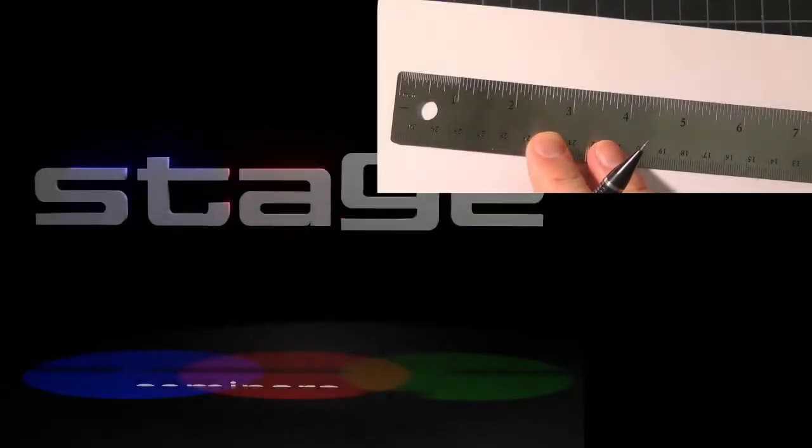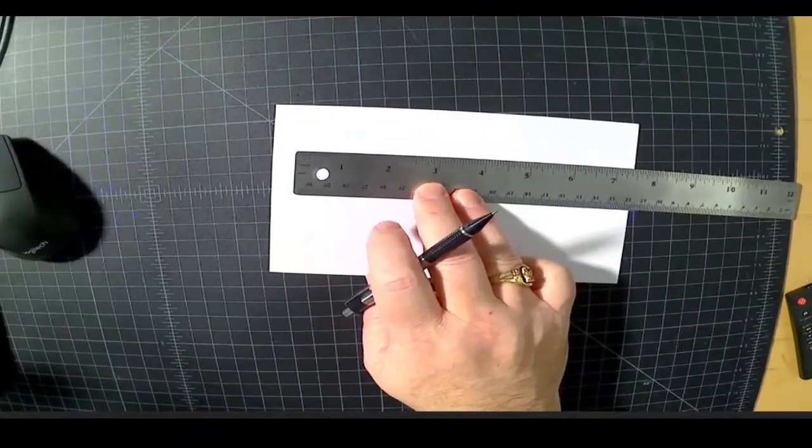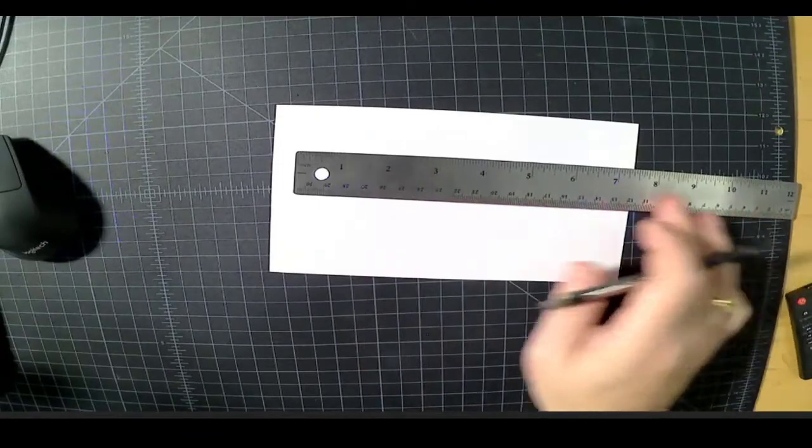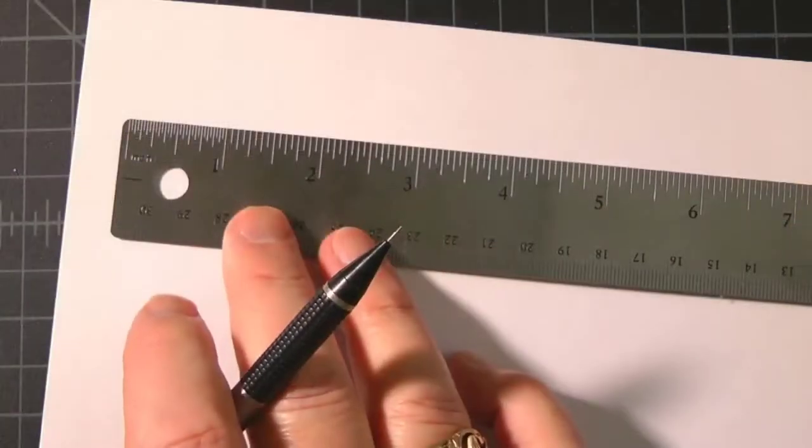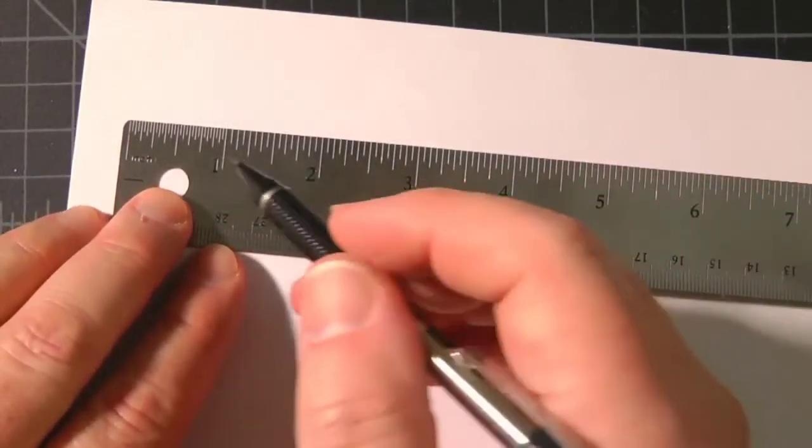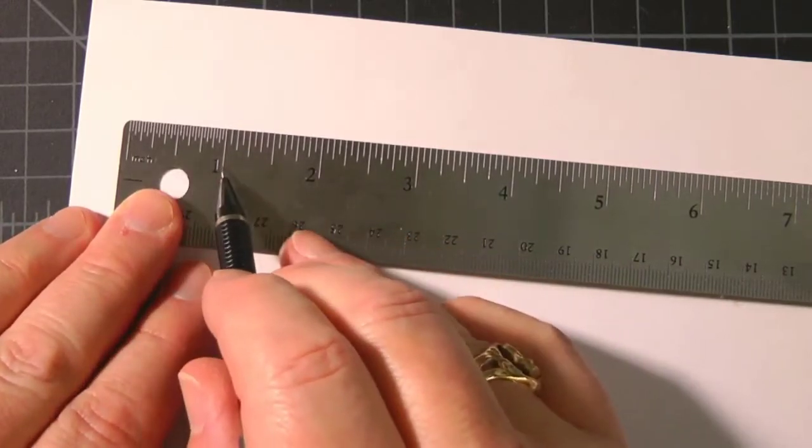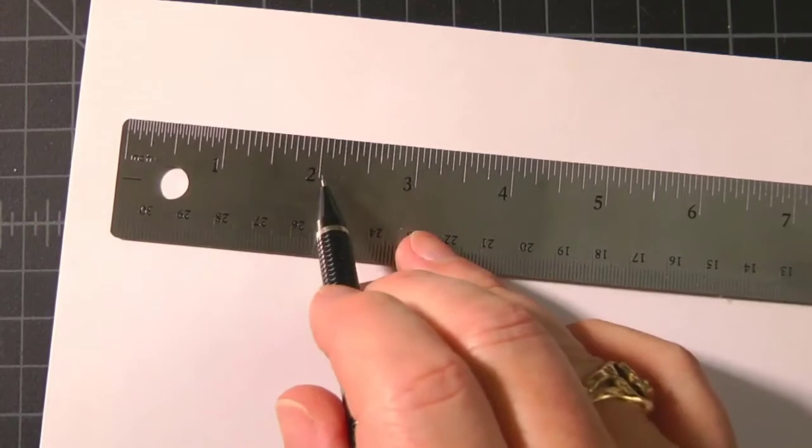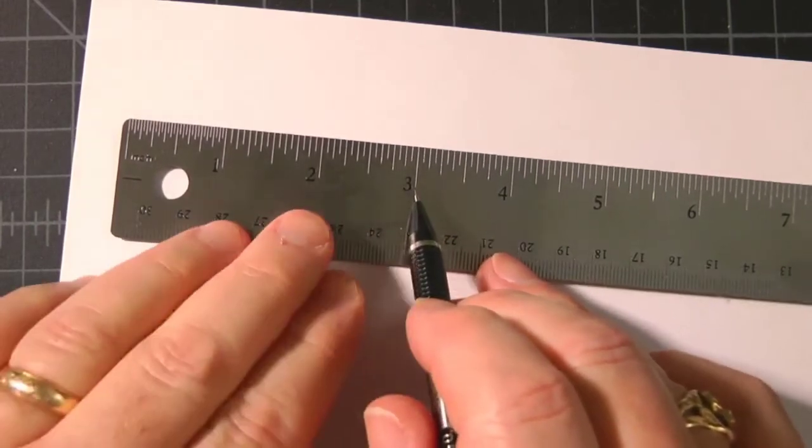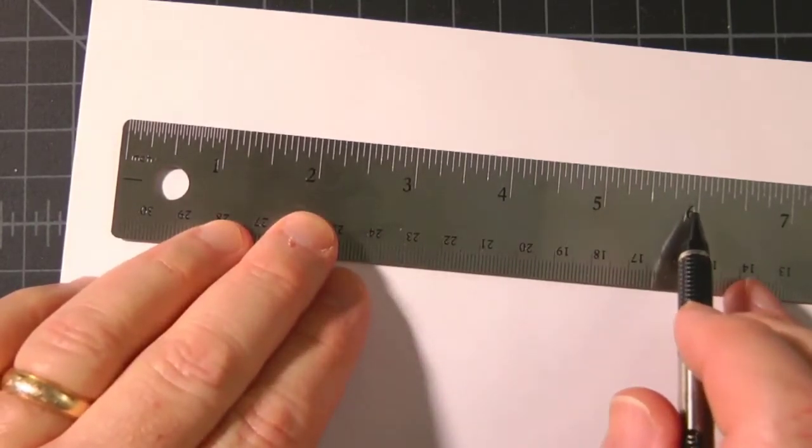Here we have a standard inch ruler. It's a 12 inch ruler, and we're going to look at how it works. Here we have zero, the zero mark, and here we have a one inch mark, and a two inch mark, three, four, five, six, and so on.